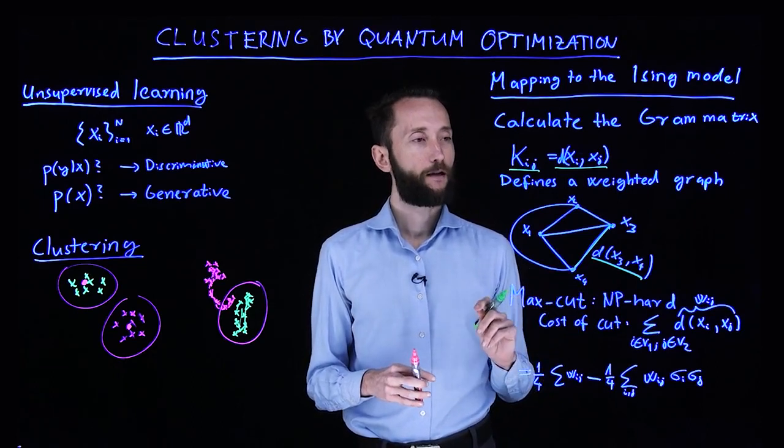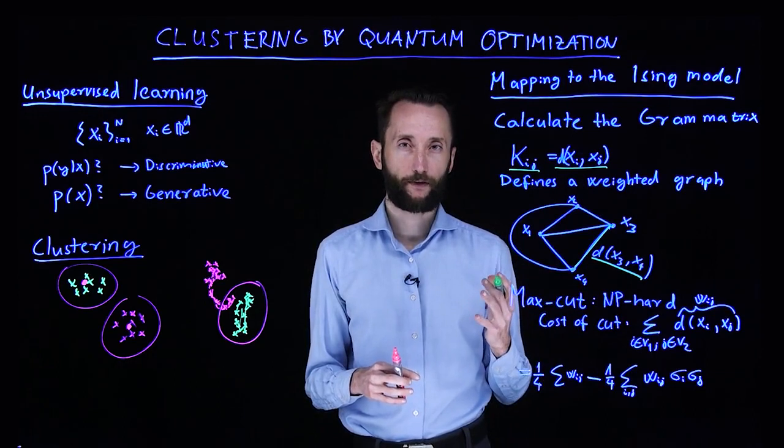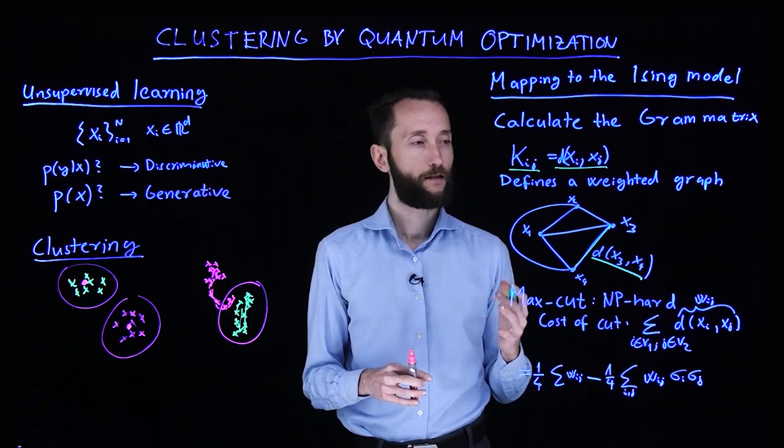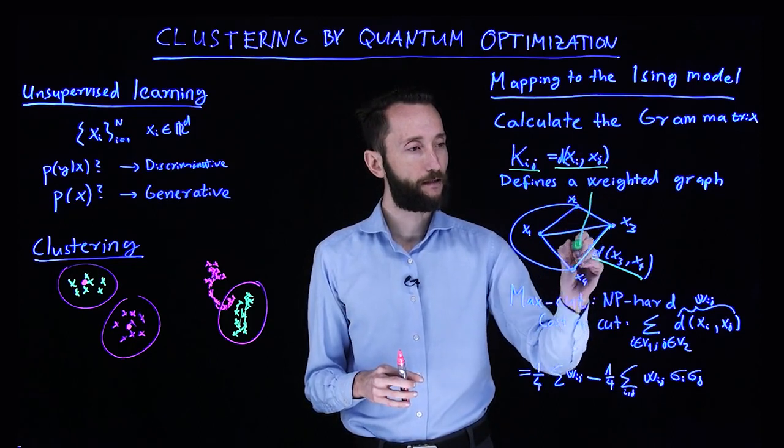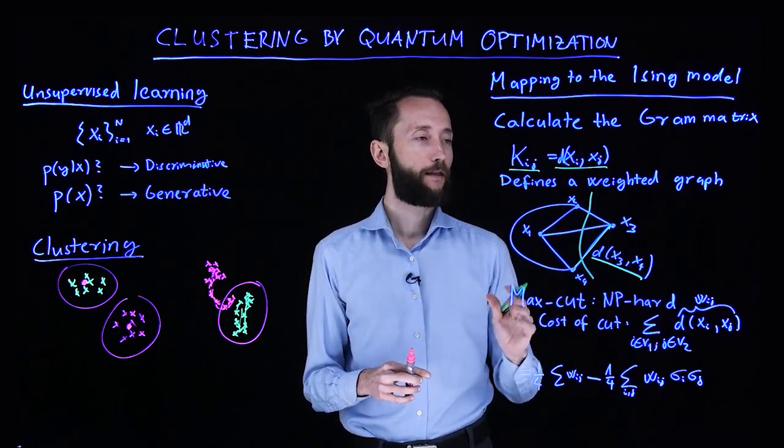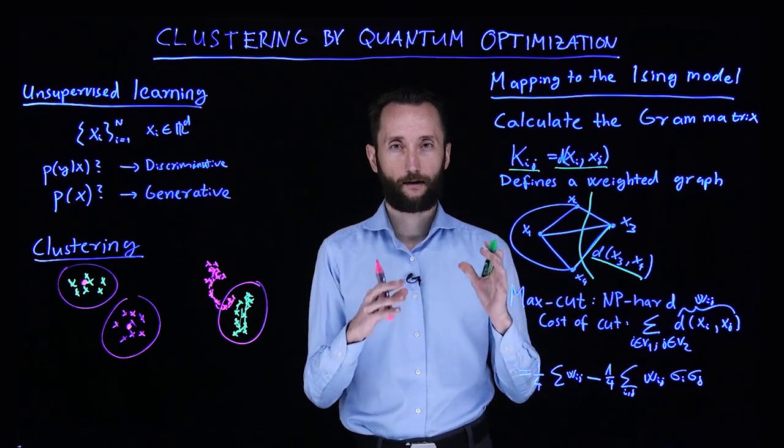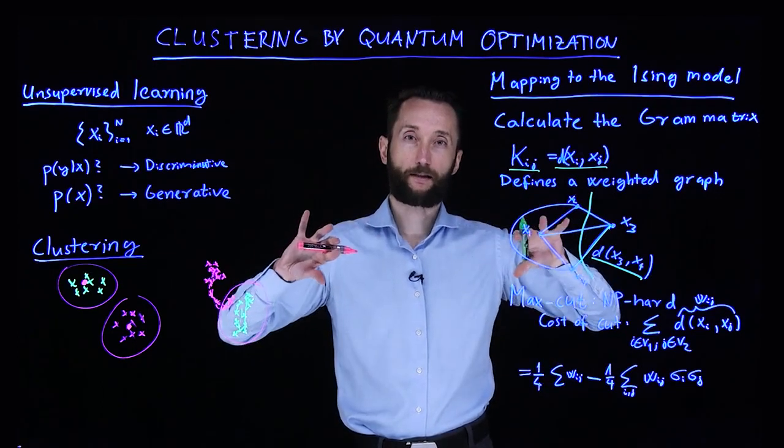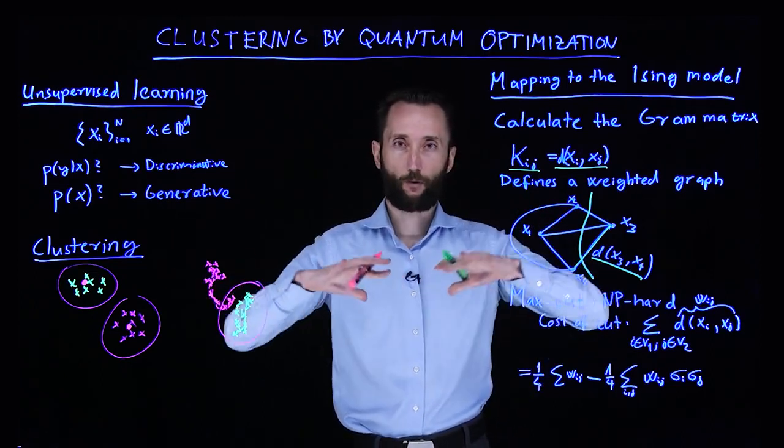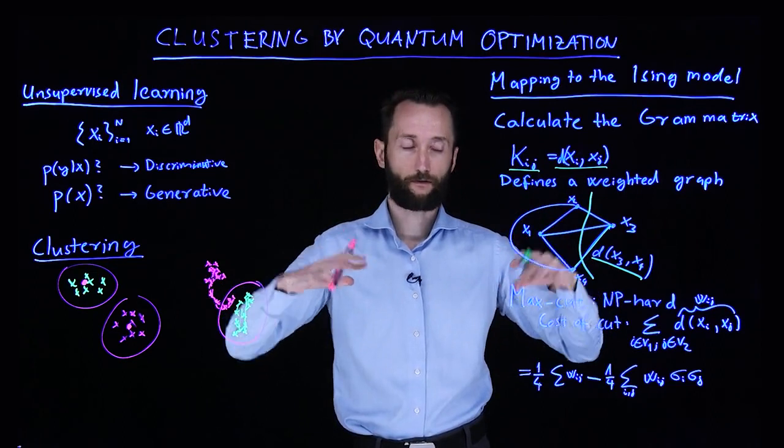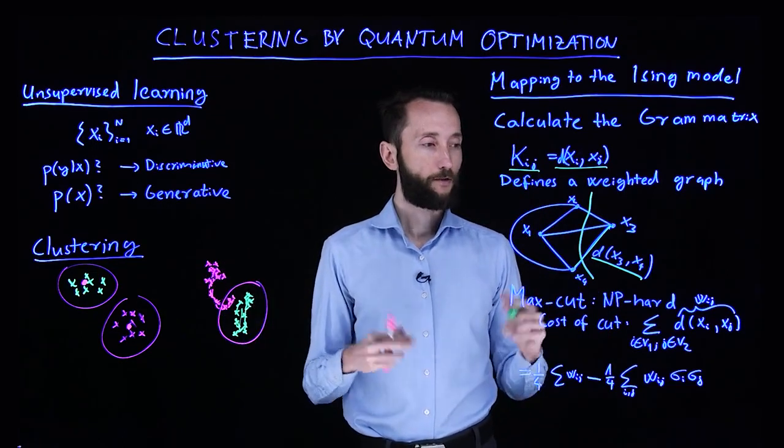Now we can ask, what's the highest value of a cut going through this graph? We want to separate this graph in two in a way that the value of this cut is maximal. That would identify these two maximally separate clusters that we are actually looking for, looking at the overall global topology of the graph, as opposed to some local heuristic.